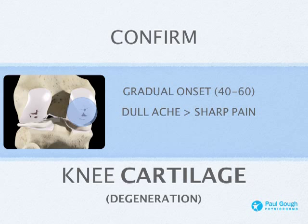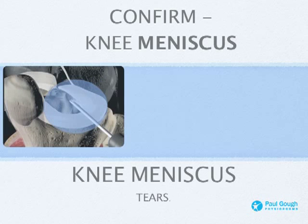That cracking starts with a dull ache, which then leads to a really sharp pain. Swelling is also a problem with this degenerative type.